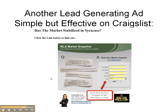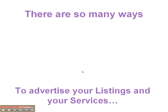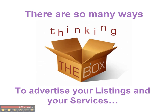Another lead generation ad, simple but effective, that you can use on Craigslist is like this one here. This is a top producer market snapshot that I also recommend — it's a great way to gain leads and to send a ton of information for buyers and sellers. This is a screenshot that I then put into a Craigslist ad, and I put an HTML code that will take the person directly to this page on the agent's website. Really easy to do, very effective. There are so many ways to advertise your listings and your services, just by thinking outside the box.